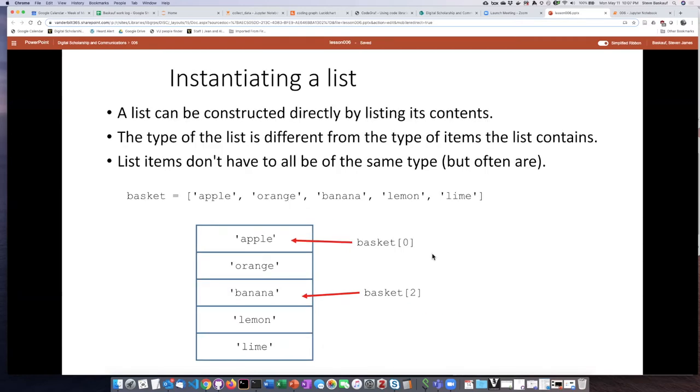If we want to create a list, we can do it directly by simply stating all of the items in the list. For example, if I want to create this basket list, I can put square brackets and then list each of the items separated by commas. When the items are strings, each needs to be in single quotes. If it were a list of numbers, I would not put quotation marks.